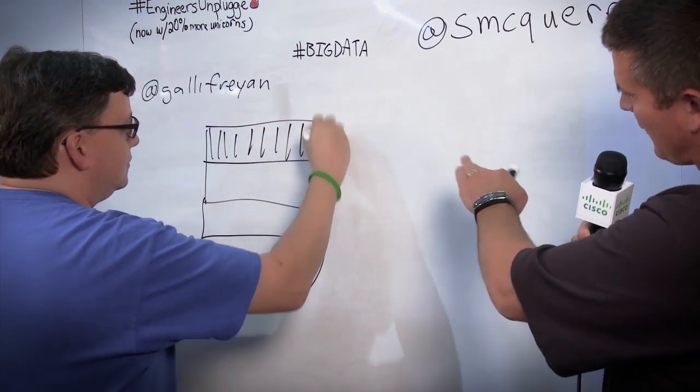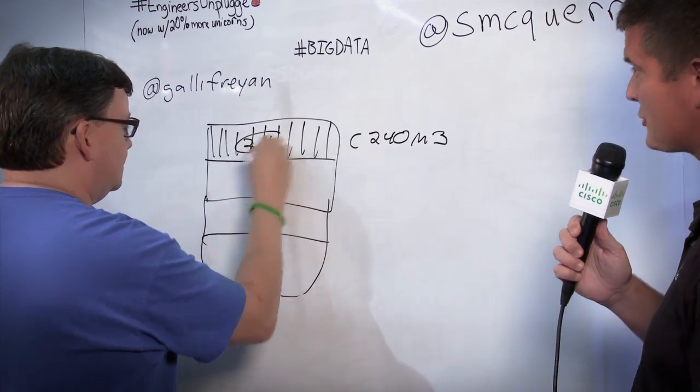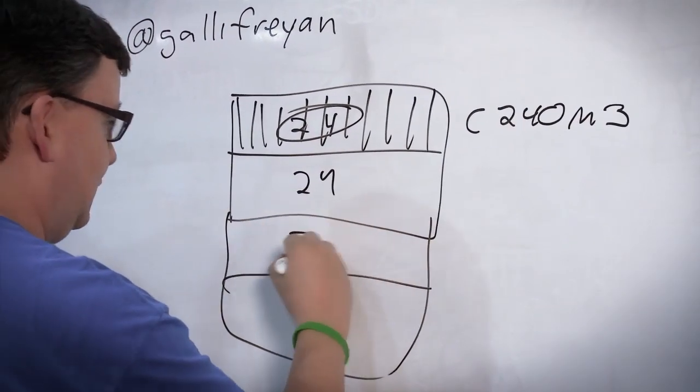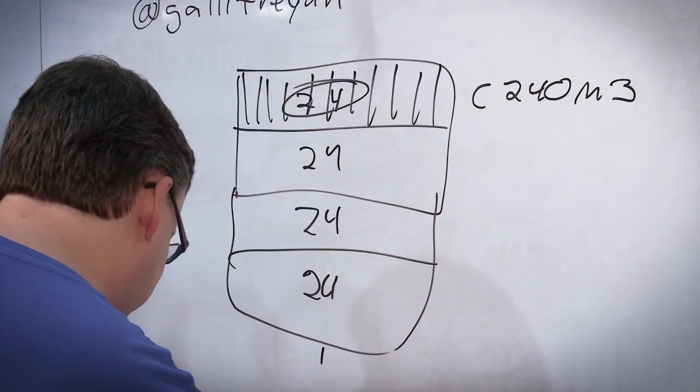So I take it this is a 2RU rack mount server, so a C240, right? And you've got lots of hard drives in here. So 24 hard drives, right? So big data, lots of data, lots of spindles. So you've got this over and over.